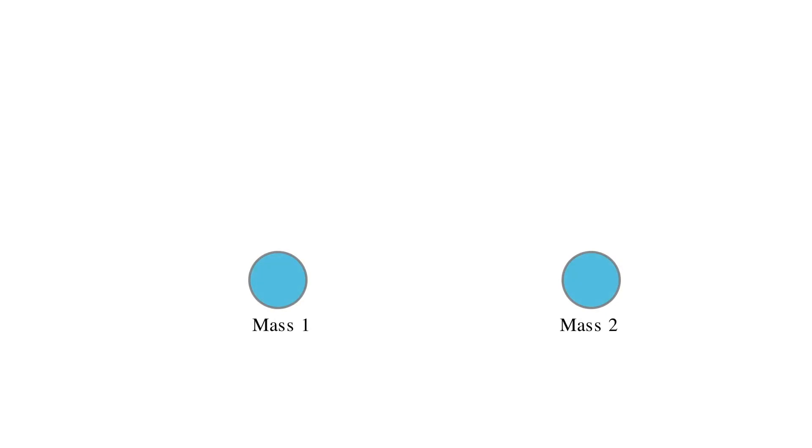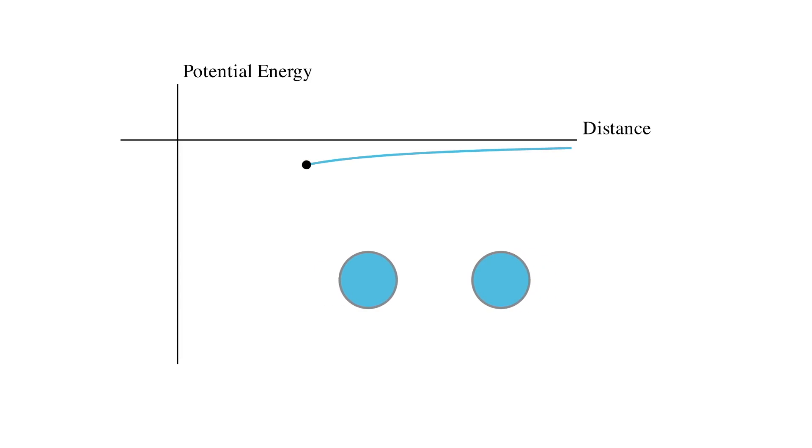The potential energy due to the gravitational force is highest when the objects are far apart. As the objects move closer together, the potential energy decreases.